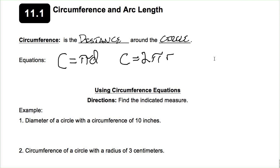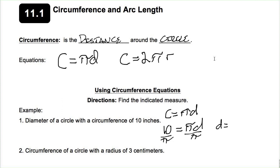For the first one, we're going to find the indicated measure — we have to find the diameter of a circle whose circumference is 10 inches. I'm going to use C = πd. It tells me the circumference is 10 inches, so 10 = πd. To solve for the diameter, divide both sides by pi. My answer is d = 10/π inches, which rounds to 3.18.